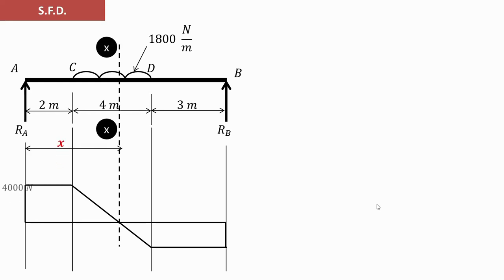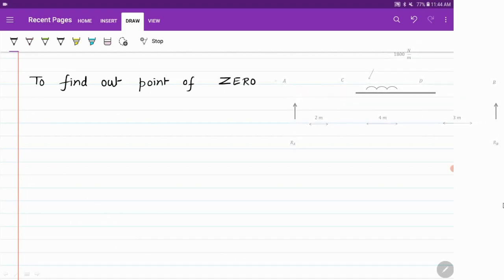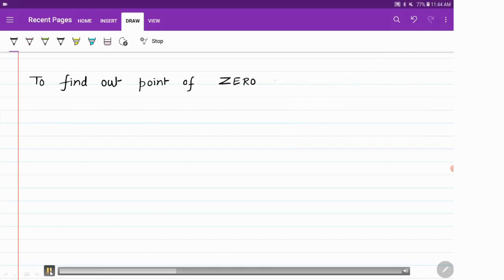Using these values we draw the shear force diagram: at A it is 4000 newton, at C it is 4000 newton, at D it is minus 3200 newton, just left of B it is minus 3200, and exactly at B it is zero. The shear force changes sign from positive to negative between C and D, indicating a point of zero shear. We consider a section XX at distance x from the left support to locate it.